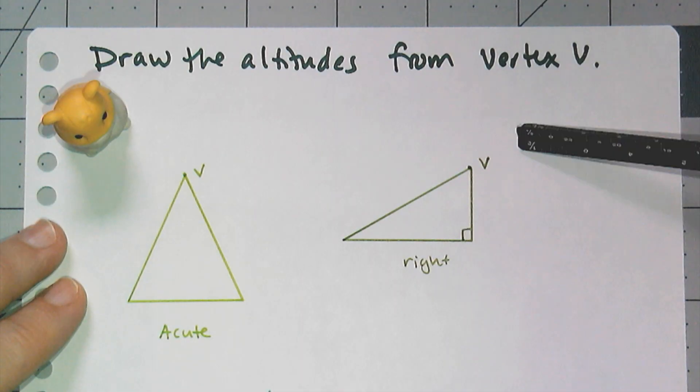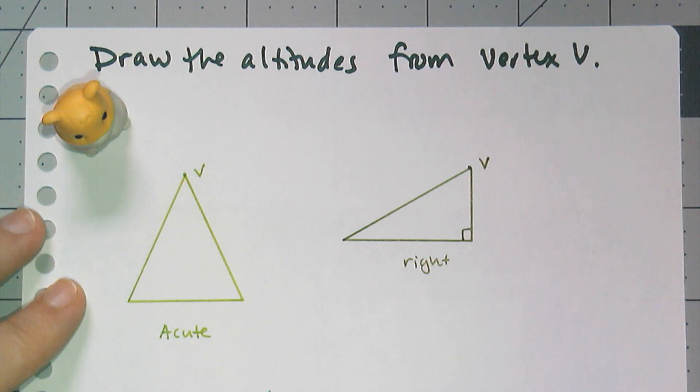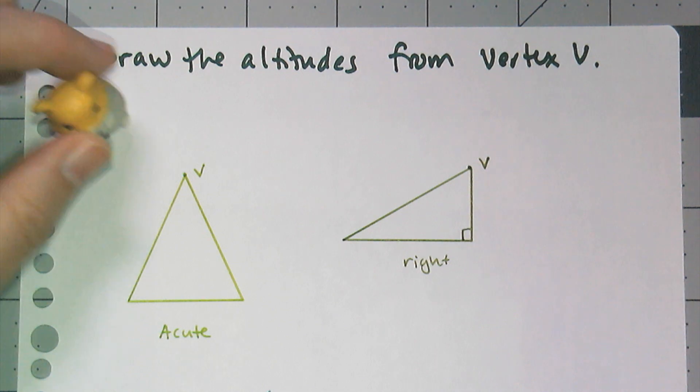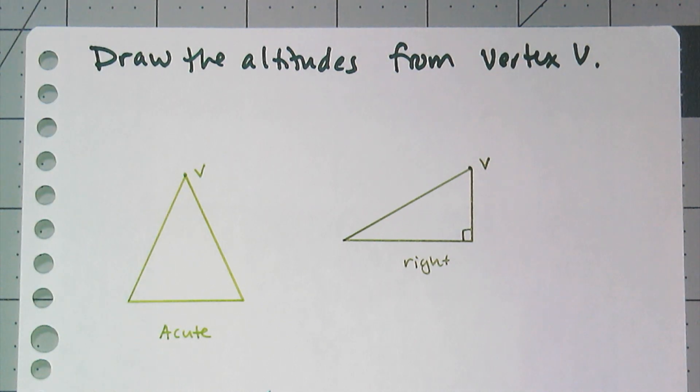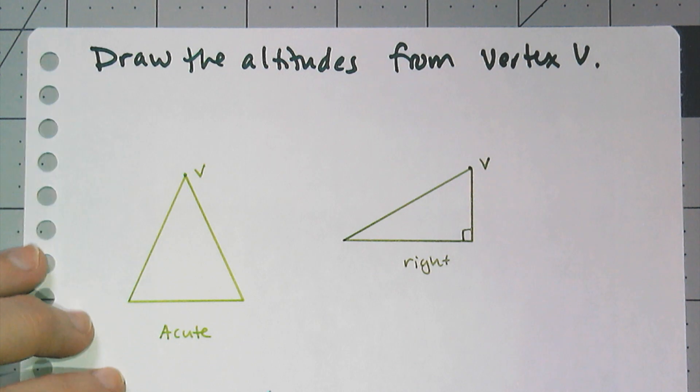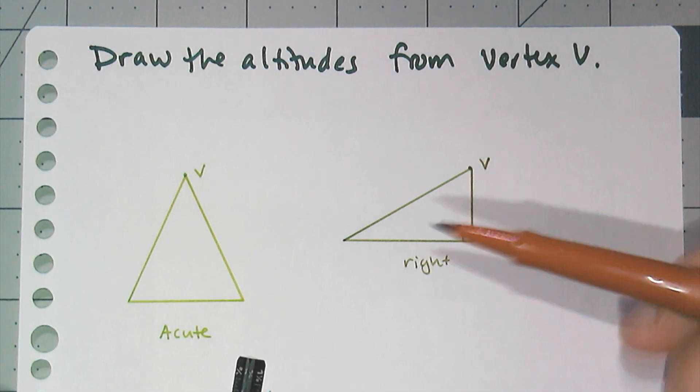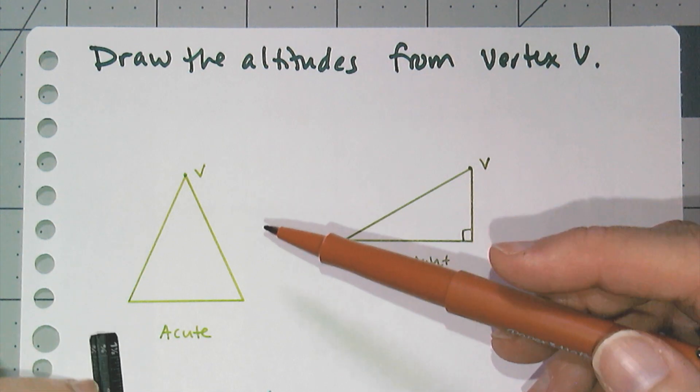We are going to end this video by drawing some altitudes of triangles from a vertex V. Of course in class we will be able to construct them because we can construct shortest distances. So I'm going to look at the triangles classified by angles.